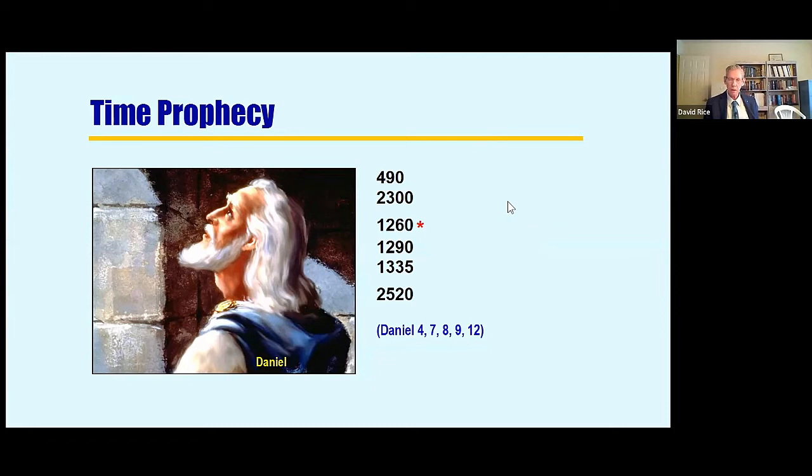You find Daniel is rich in time prophecy. Daniel chapter four, chapter seven, chapter eight, chapter nine, and chapter twelve all speak of specific time prophecies that are involved in this list of six. And we'll add a seventh one a little bit later, but it won't be from the book of Daniel.